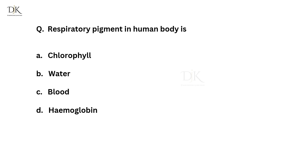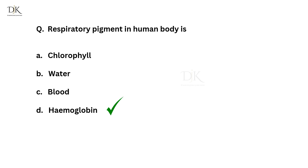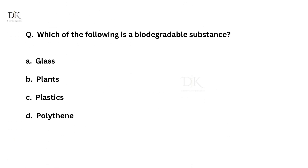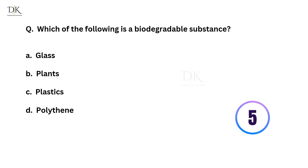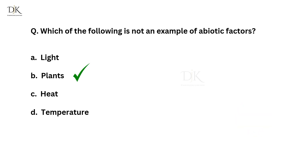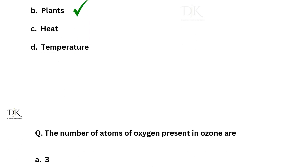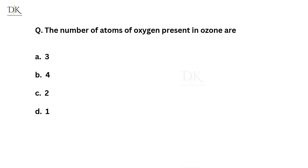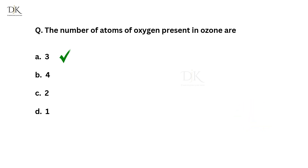Respiratory pigment in the human body is? The right answer is hemoglobin. Which of the following is a biodegradable substance? The right answer is plants. Which of the following is not an example of abiotic factors? The right answer is plants. The number of atoms of oxygen present in ozone are? The right answer is 3.